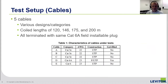We conducted our analysis with five different cables with various designs and categories, tested at coiled lengths of 120, 146, 175, and 200 meter link segments. They were all terminated with the same CAT6A field-installable plug. This particular plug was chosen because it had an OD large enough to accept all cables within the test set, allowing us to focus primarily on cable properties rather than what the plug itself contributed to the success rate.